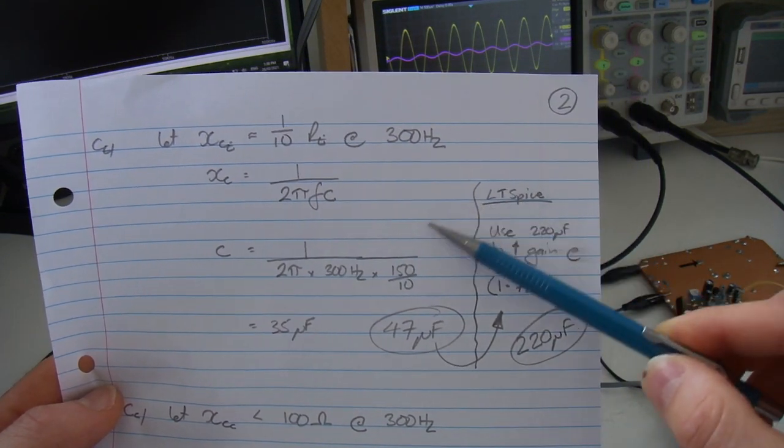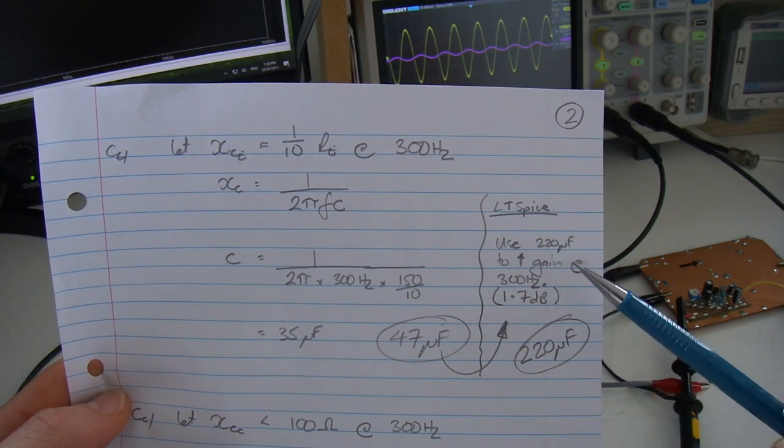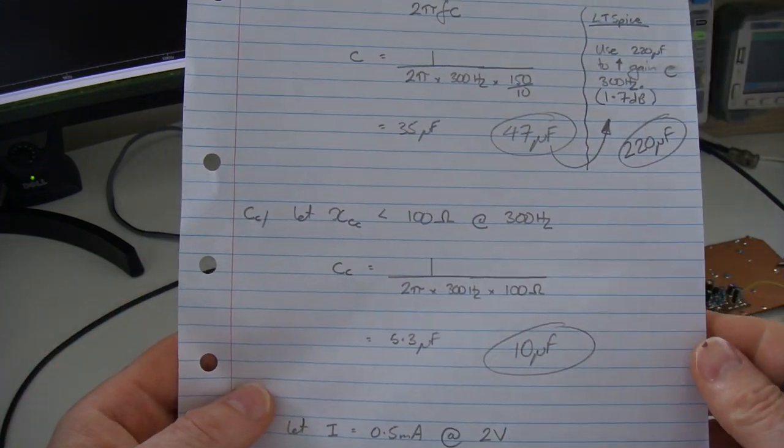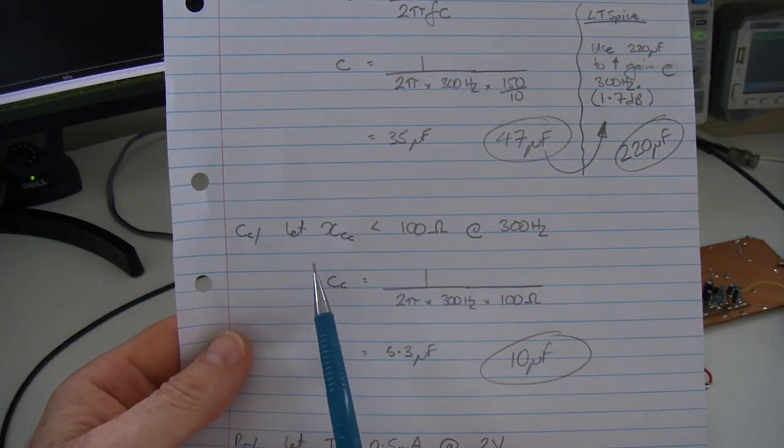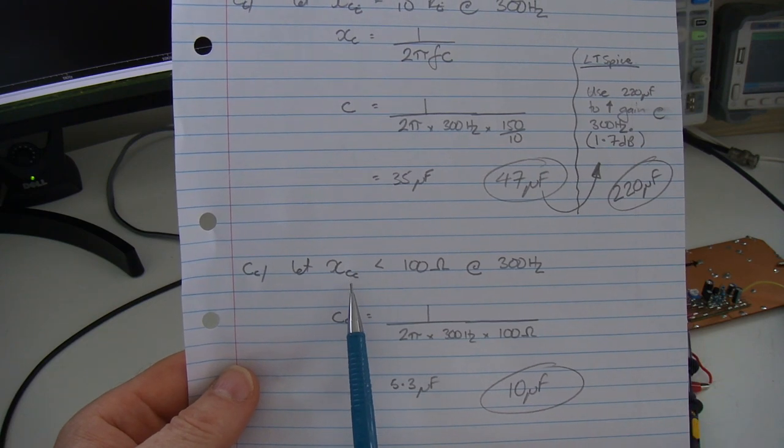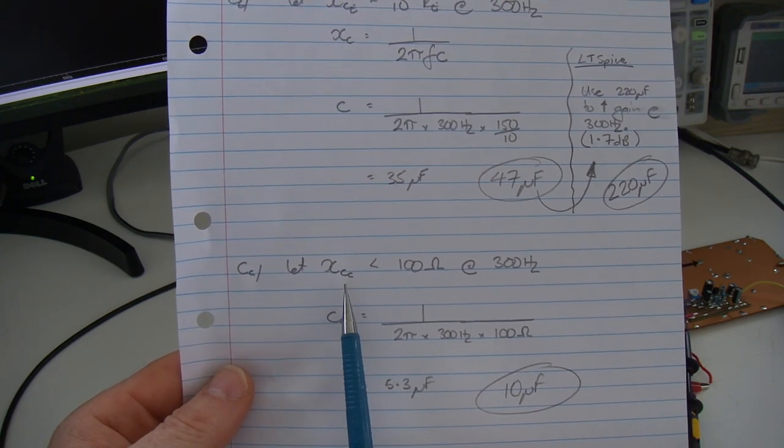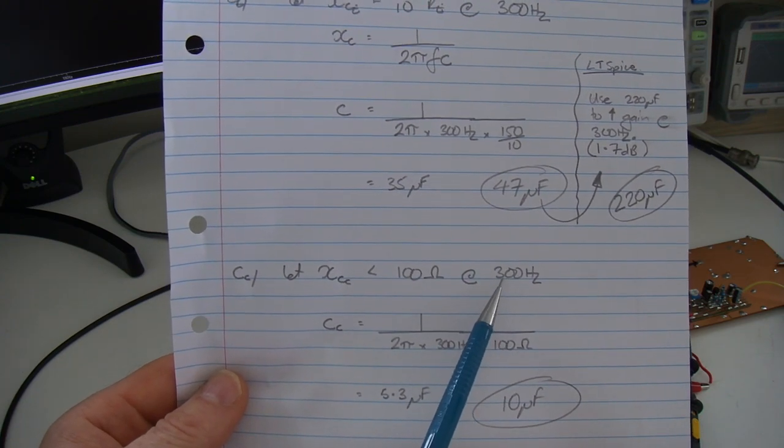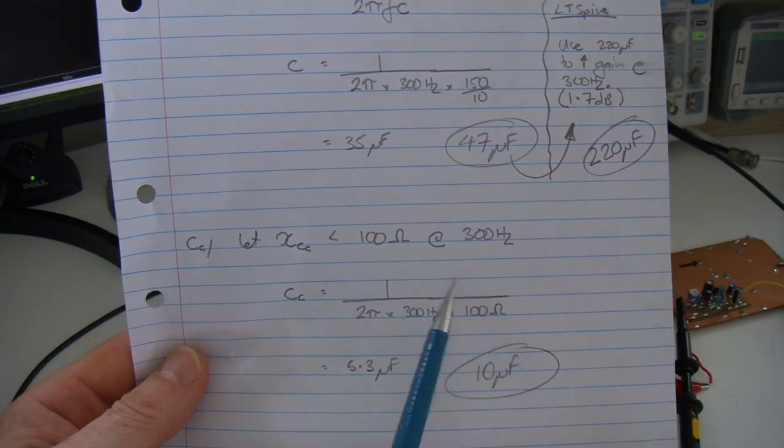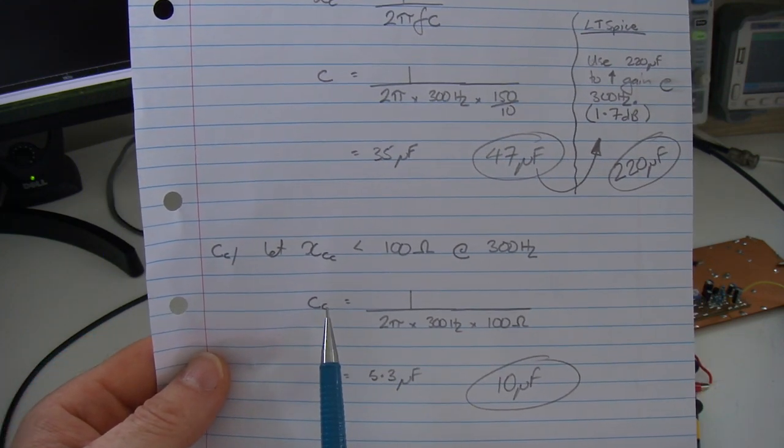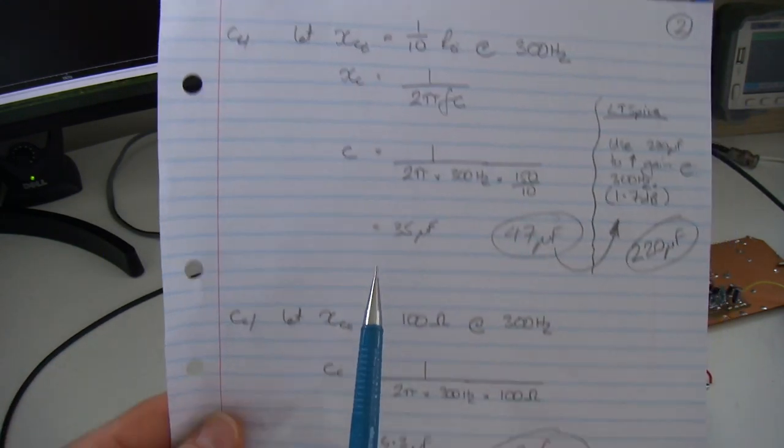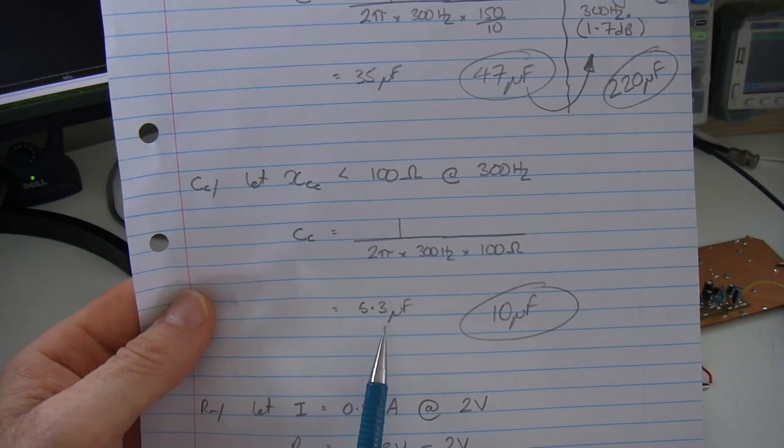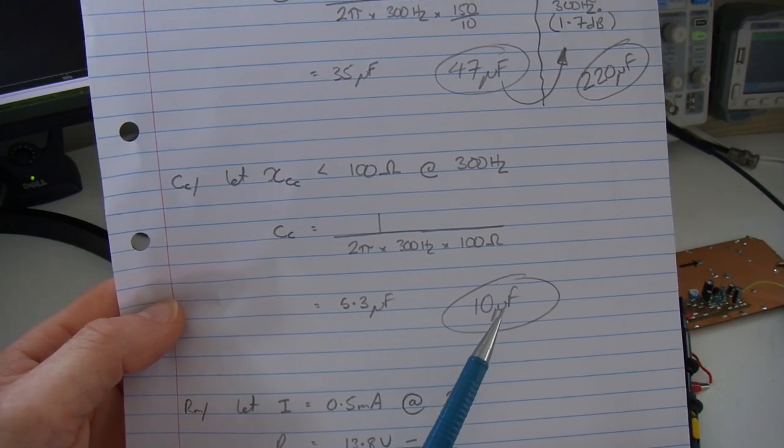For the two coupling capacitors, as a starting point, rules of thumbs I've seen before, to have the capacitive reactance of those two coupling capacitors to be less than 100 ohms at our lowest frequency of operation. Throwing that into the equation, or rearranging our capacitive reactance formula to make the capacitor the subject, we come out at 5.3 microfarads. I'm going to up that to 10 microfarads.